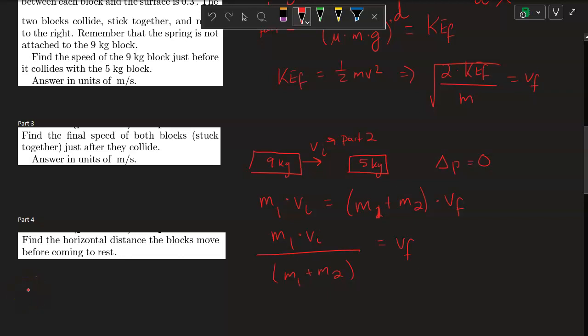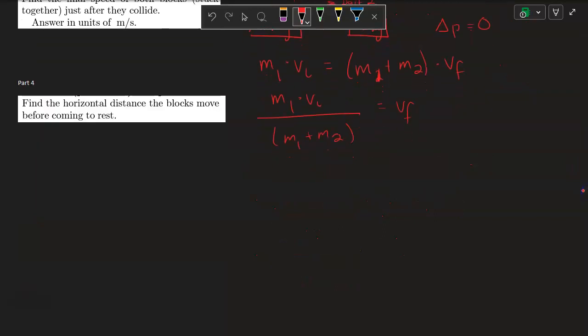And then for part 4, find the horizontal distance the blocks move before coming to a rest. Here we are going to use the work done by friction is what causes the two blocks to change their kinetic energy, going from an initial kinetic energy to a final kinetic energy of 0.